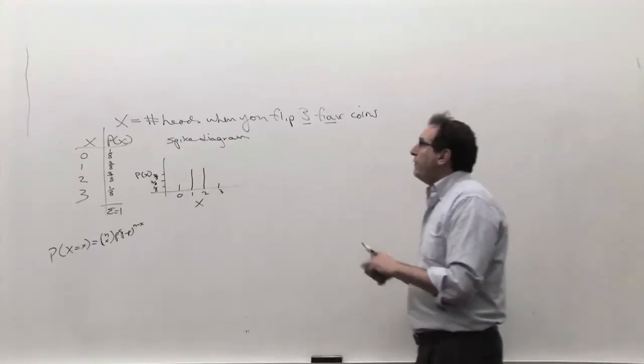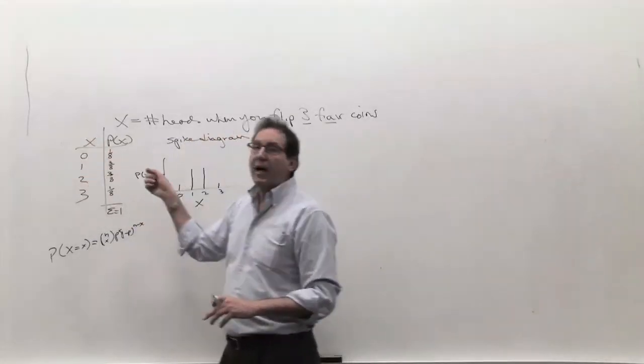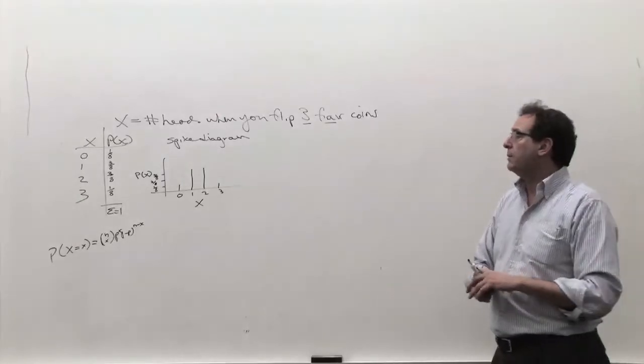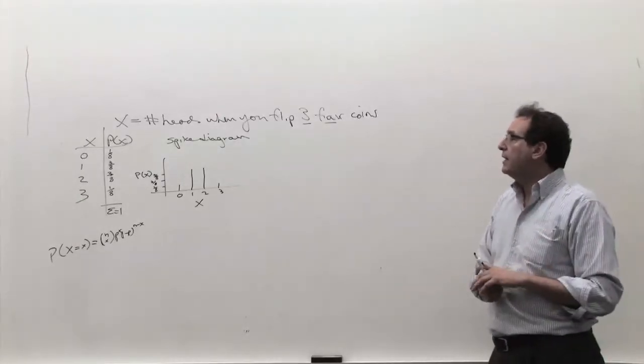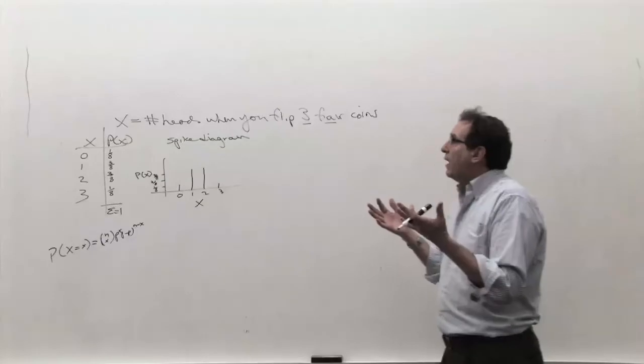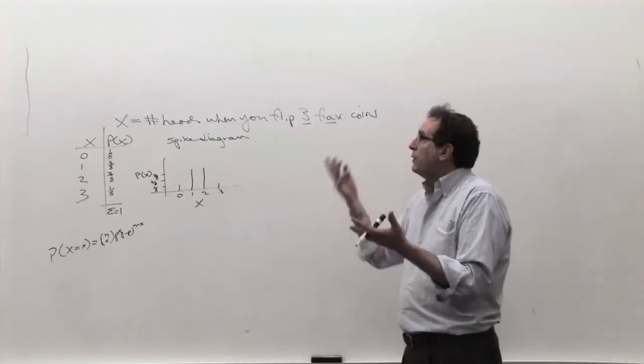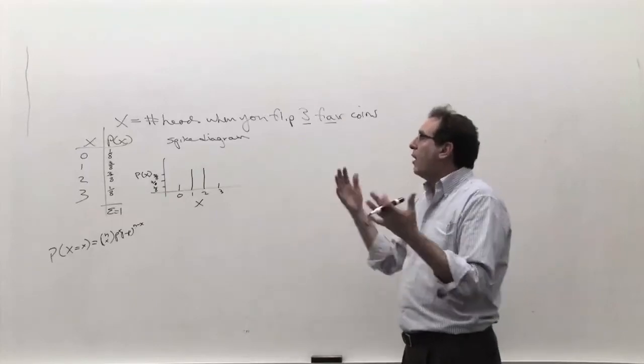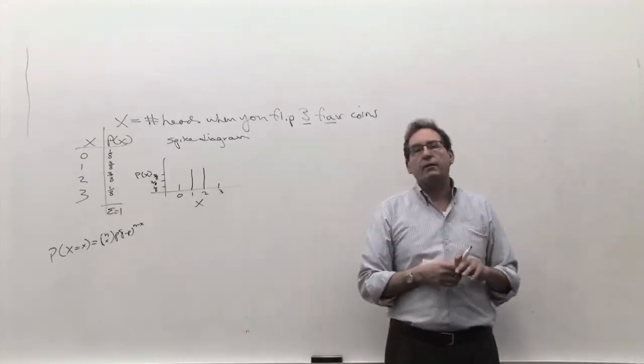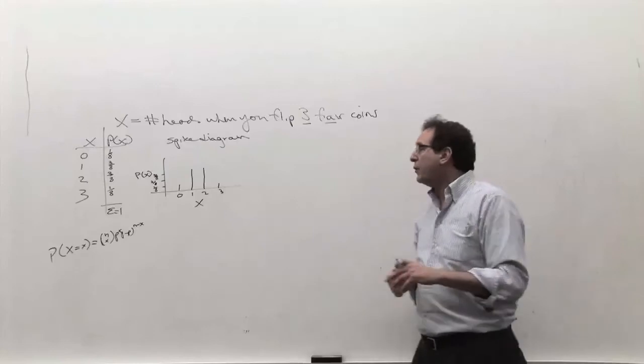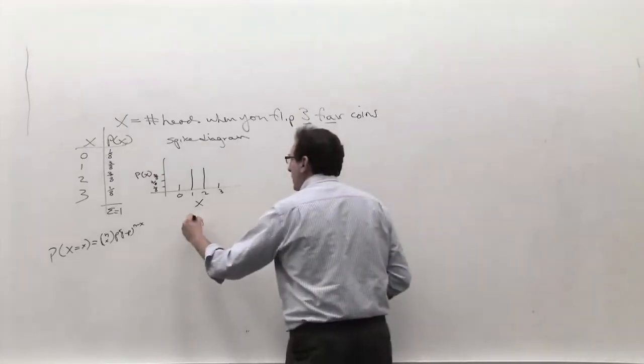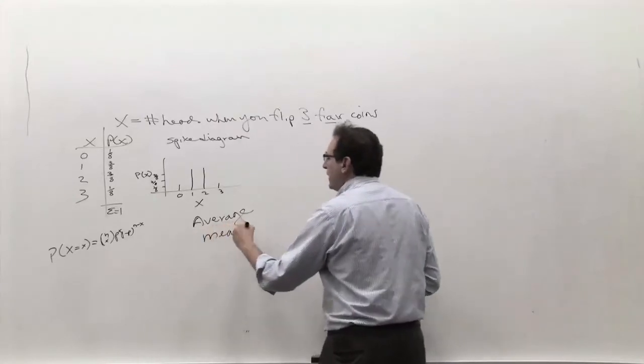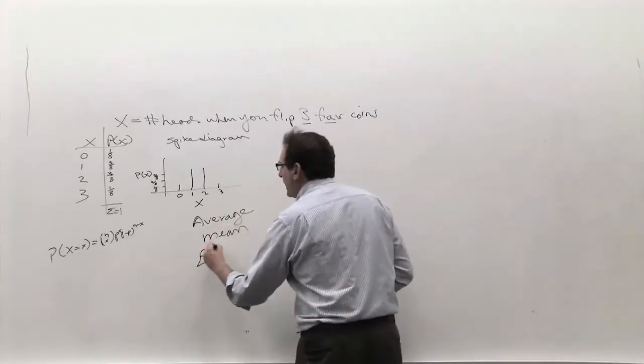But once we have this information about the random variable, a very common question, a very important question, hopefully you'll see from the homeworks how important this could possibly be in real-life business applications, is to answer the question: sometimes we flip three coins and we get two heads, sometimes one head, sometimes three heads, sometimes no heads. On the average, how many heads do you get? That question, on the average, which is a really simple way of saying it, is called the mean, that's a fancy way of saying it.